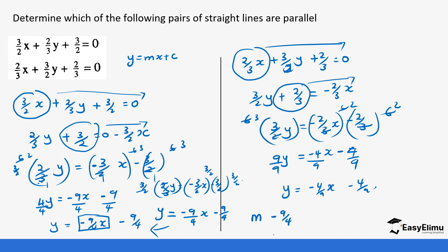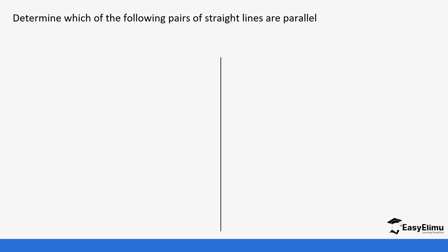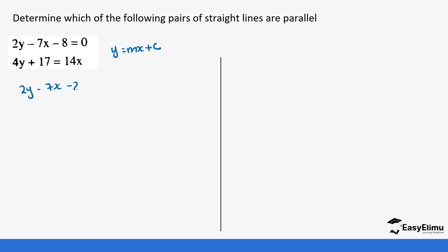The gradient of the first equation is -(9/4) and the gradient of the second is -(4/9). These are not equal, so this pair of lines is not parallel. Let's do another example: determine which of the following pairs of straight lines are parallel. We have to put our equations in the form y = mx + c. Starting with the first equation: 2y - 7x - 8 = 0.